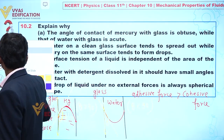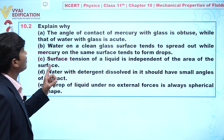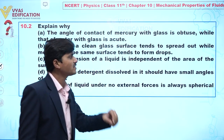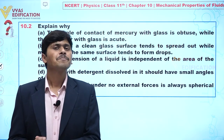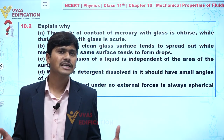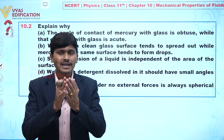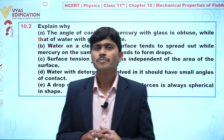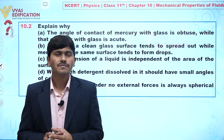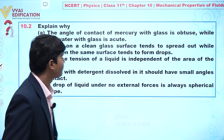Now for part B: water on a clean glass surface tends to spread out, while mercury on the same surface tends to form drops. Again the answer is the same — between water and glass, adhesive force is greater than cohesive force, so water spreads out. For mercury, cohesive force is greater than adhesive force, so mercury molecules always want to form a droplet.